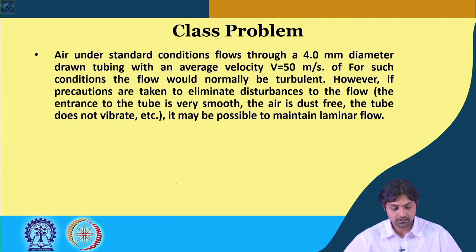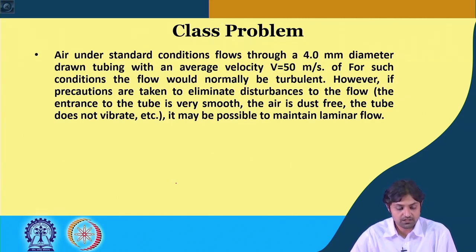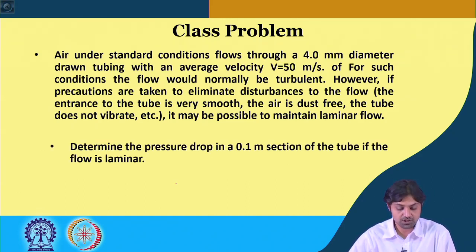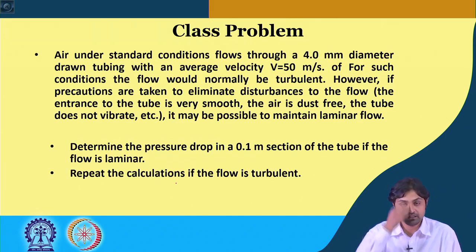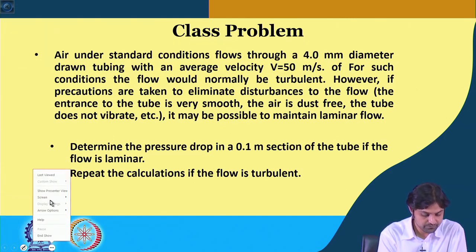Moving ahead, there is another question: air under standard conditions flows through a 4 mm diameter drawn tubing with an average velocity of 50 m/s. For such conditions, the flow would normally be turbulent; however, if precautions are taken to eliminate disturbances, it may be possible to maintain laminar flow. Part one: determine the pressure drop in a 0.1 m section if the flow is laminar. Part two: repeat the calculations if the flow is turbulent.